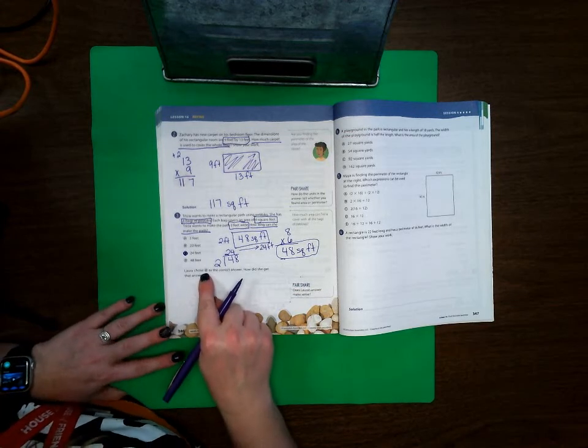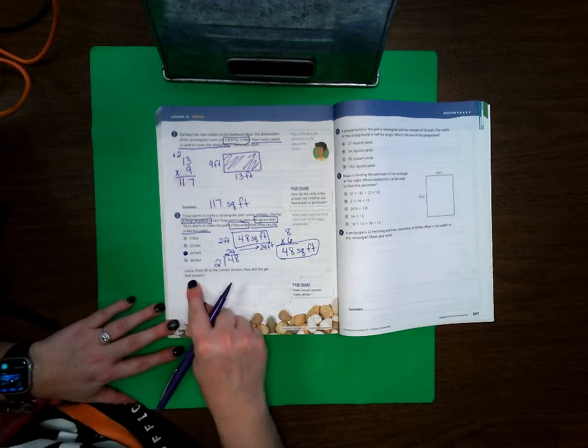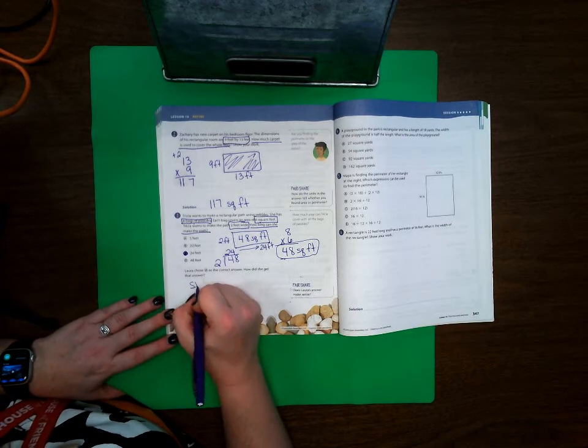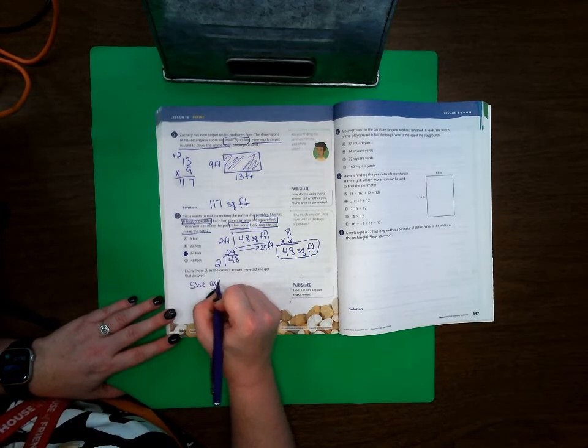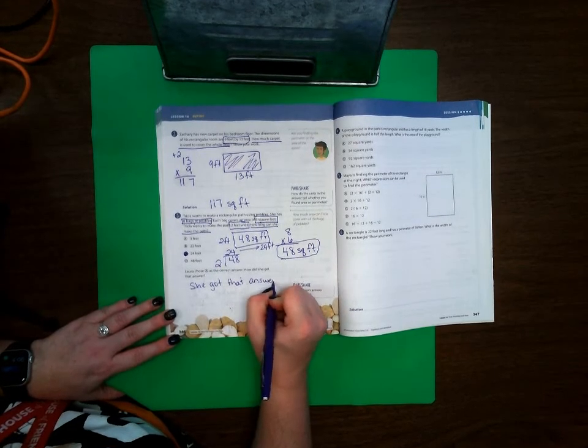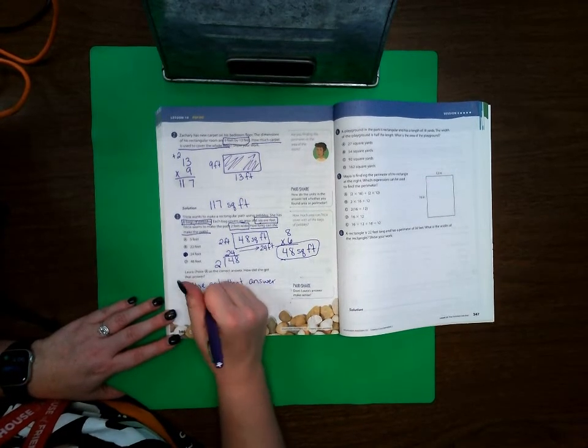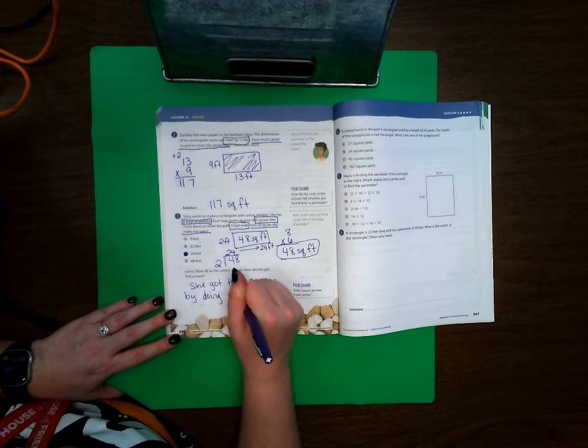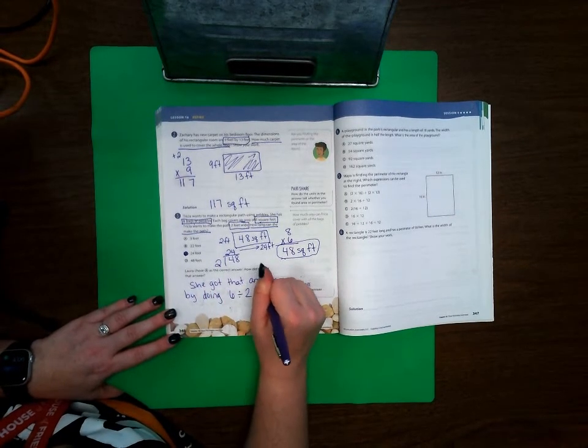Laura chose A as the correct answer. How did she get that answer? Well, she got that answer by doing 6 divided by 2 equals 3.